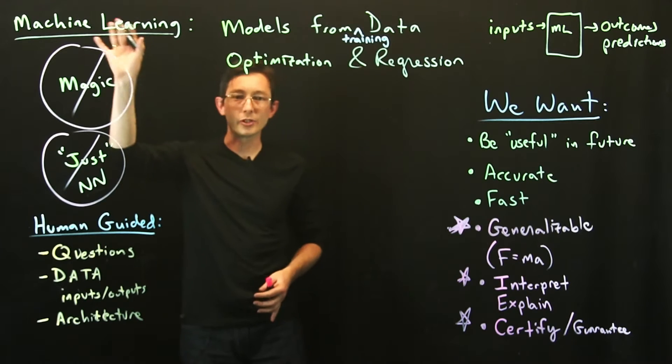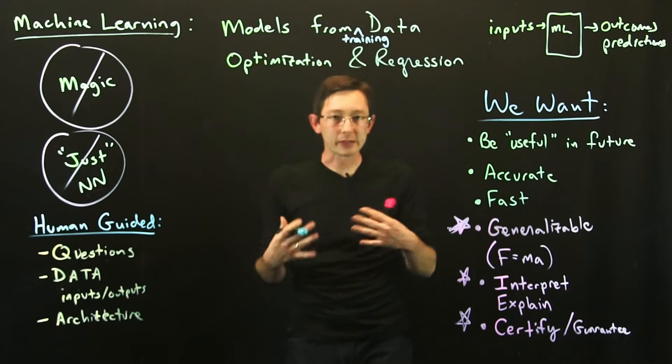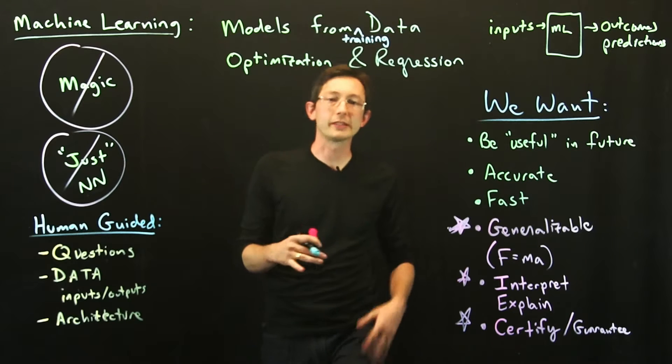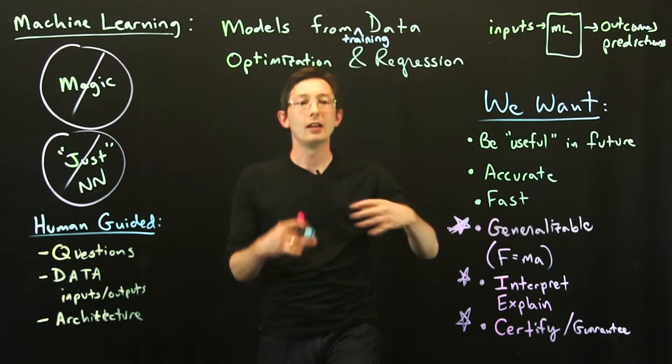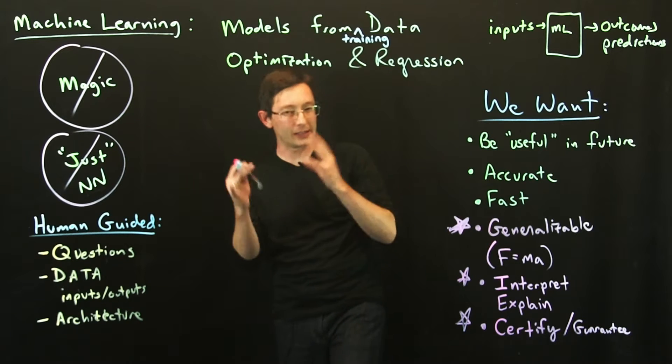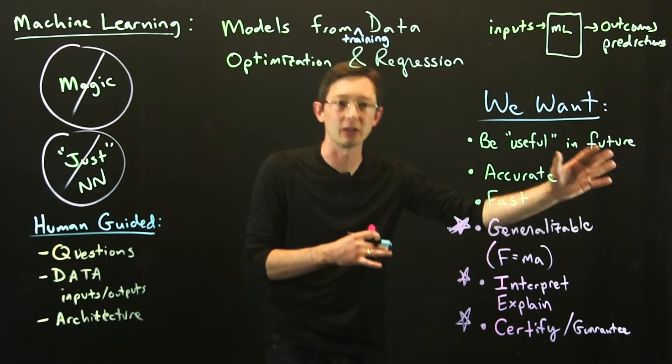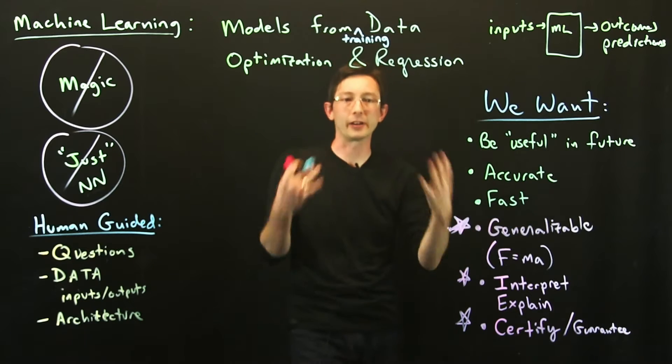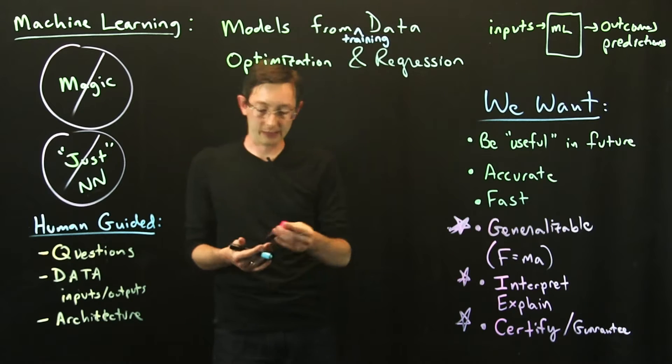Welcome back. So we're talking about machine learning models from data, and we want those models to be accurate and fast, and especially to be useful in the future. And so I want to dig in a little bit more into what I mean by useful in the future, what it means for a model to be generalizable.